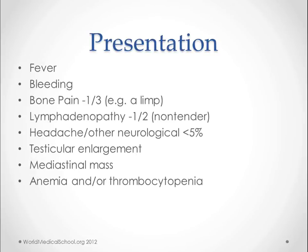Headache and other neurological problems occur in about 5%. Fever and bleeding are also things to watch out for. Testicular enlargement is a little less common but still happens. Mediastinal mass is another presentation. Almost all of these patients have anemia or thrombocytopenia, due in part to the lymphoblasts crowding out normal healthy cells, so you don't get thrombocytes or red blood cells forming as well.